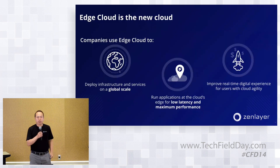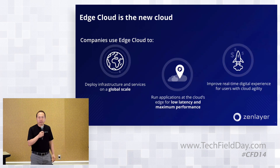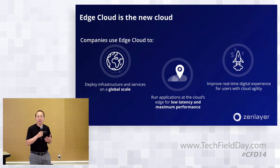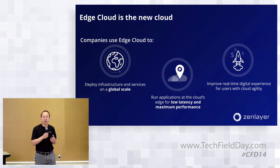Edge cloud allows a typical company to roll out their infrastructure as a service globally. So if they want to roll out their servers and VMs in Latin America, in Europe, or in South Asia, they can use the edge cloud to deliver that. After they roll out the infrastructure, they can quickly enable the service, benefiting from low latency and fast performance at the edge.